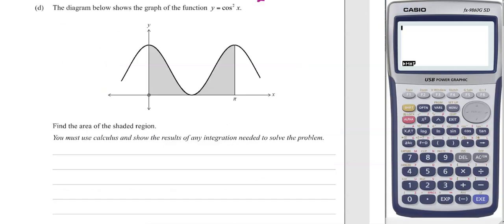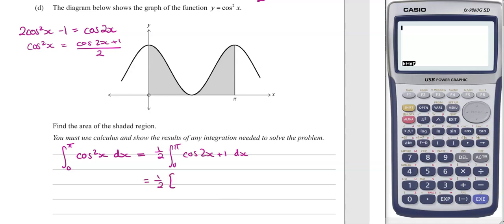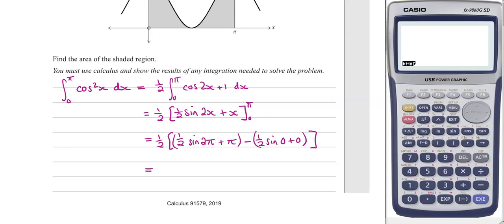On part d we're finding the area of the shaded region, which means we integrate from 0 to pi of that curve. We need to use our trig formulae to help us with cos squared. If we rearrange this identity on your formula sheet, cos squared x will be cos 2x plus 1 all over 2. This is equivalent to half of the integral of cos 2x plus 1. Cos integrates to sine, then divide by 2. Now sine of 2 pi is 0, so is sine of 0. So we end up with our final solution of pi by 2.